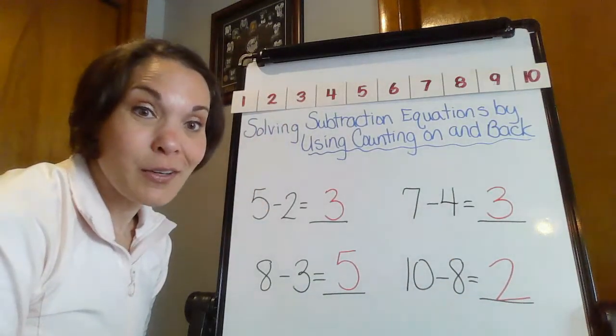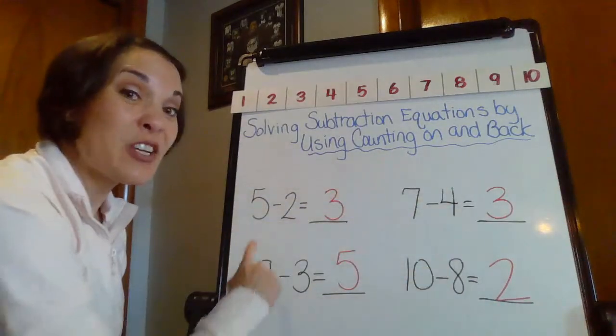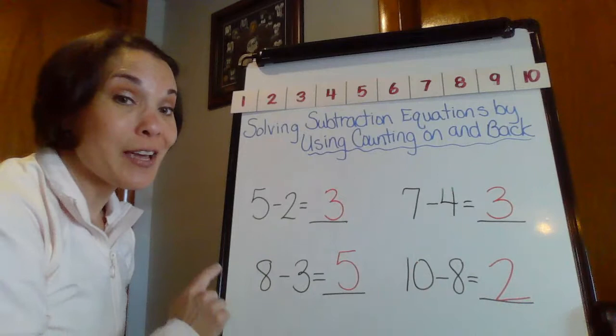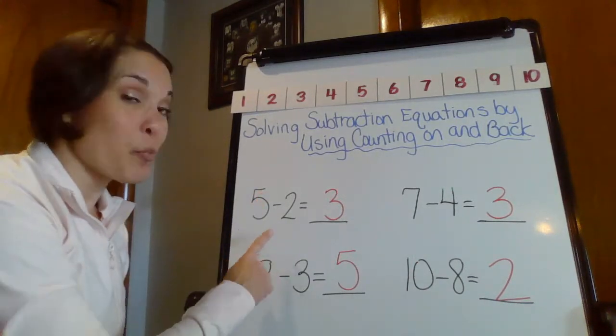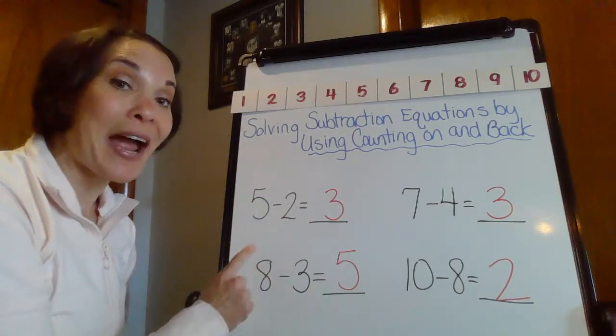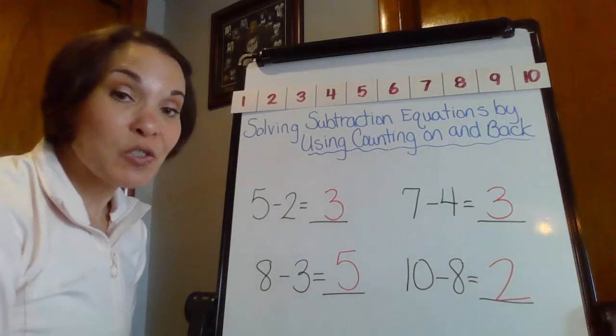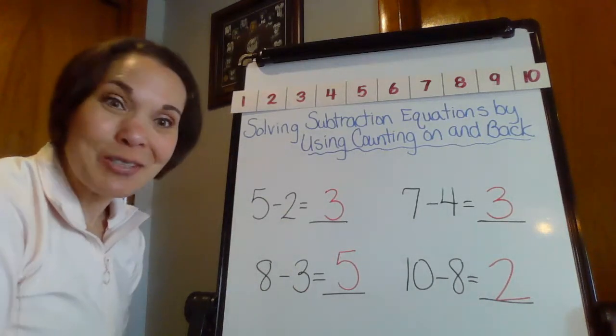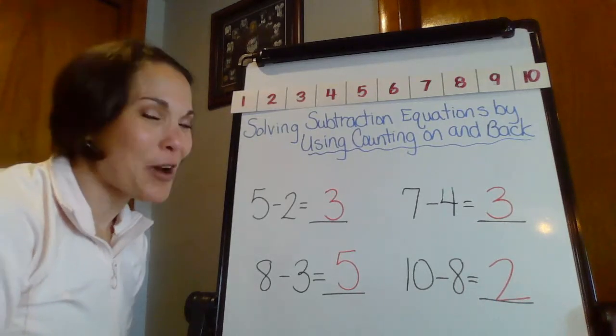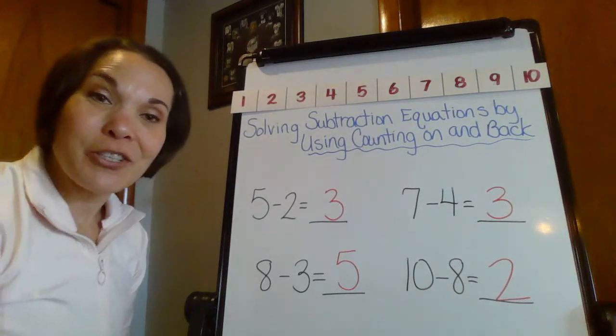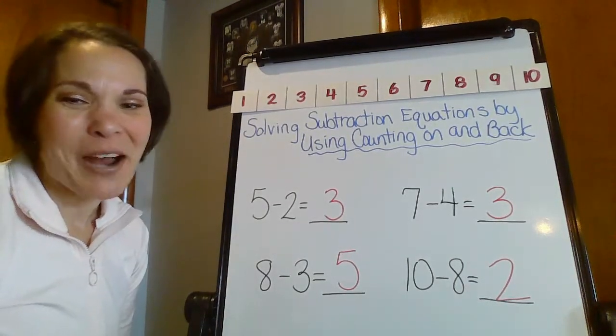So boys and girls, we did it. We use two different strategies to figure out for each one of those subtraction number sentences. We counted on starting with the part and going to that big whole number. And we counted back starting with that big whole number and counting back that smaller part. So boys and girls, I hope you like our little review, our little tutorial on some additional subtraction strategies. I encourage you to always try some of these at home and I'll be talking to you all again soon. Bye everyone.